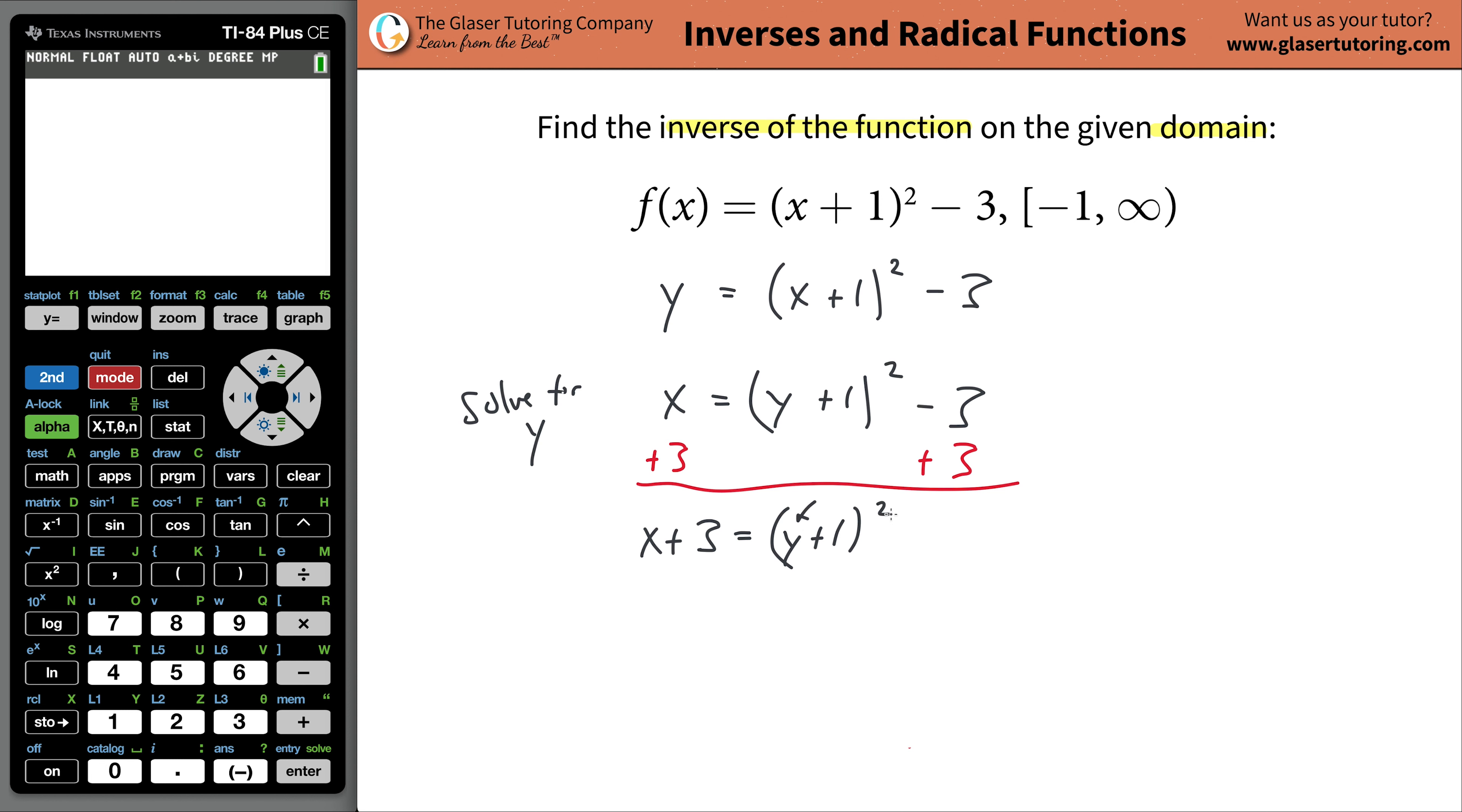Now to get at the y, we're going to have to get rid of that square, so we have to now take the square root of both sides. So the square root then of x plus three is going to be equal to y plus one. Remember, it just gets rid of the square there.